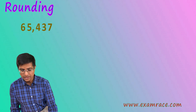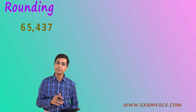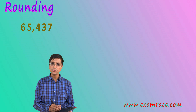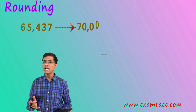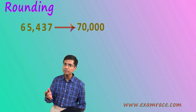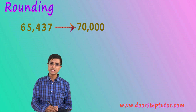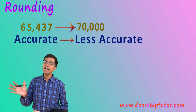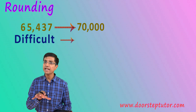Now let's move on to a very important topic which is rounding. When I am doing rounding I am trying to make my calculations simpler. For example, consider this number 65437. This number is way more complicated than 70000. If I do calculations using 70000, those calculations — addition, subtraction, multiplications — would be much simpler. When I use 70000 I lose some accuracy but I gain some speed. This is what is known as rounding: making numbers simpler at the cost of losing accuracy.